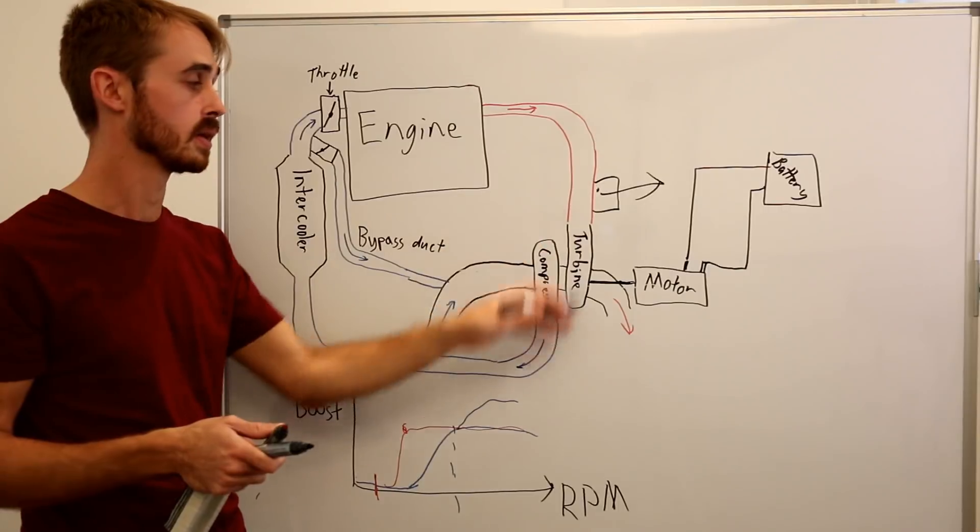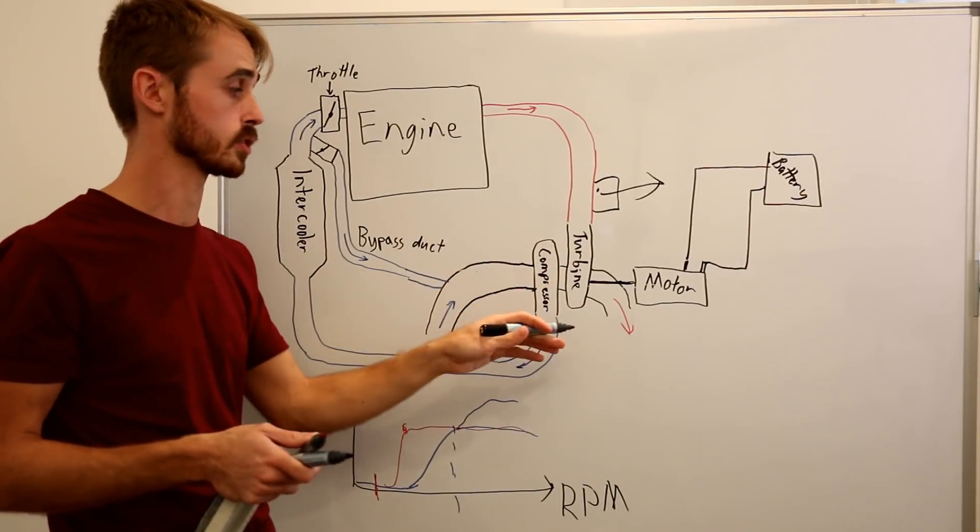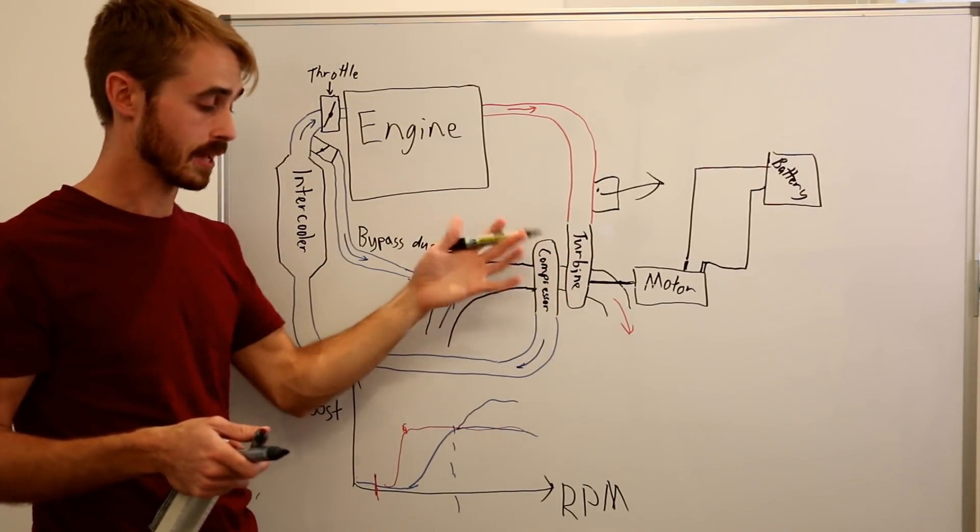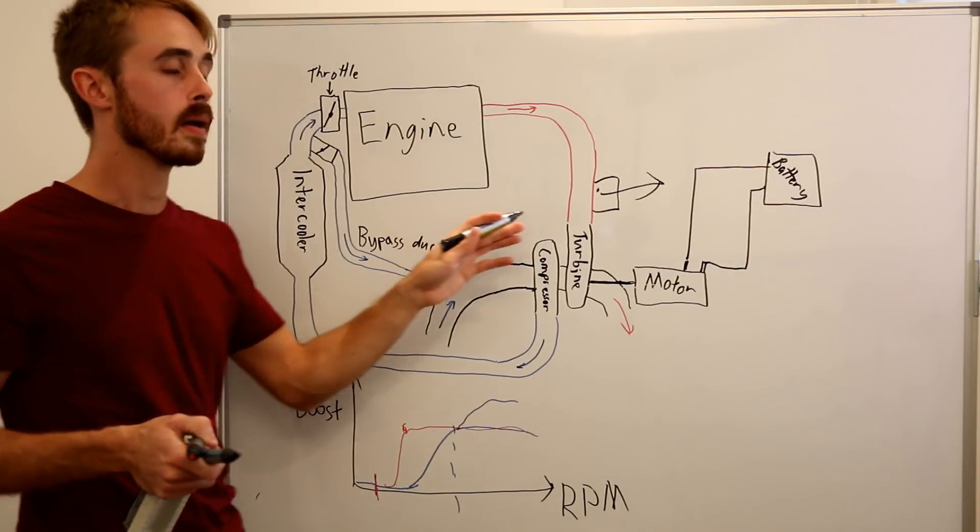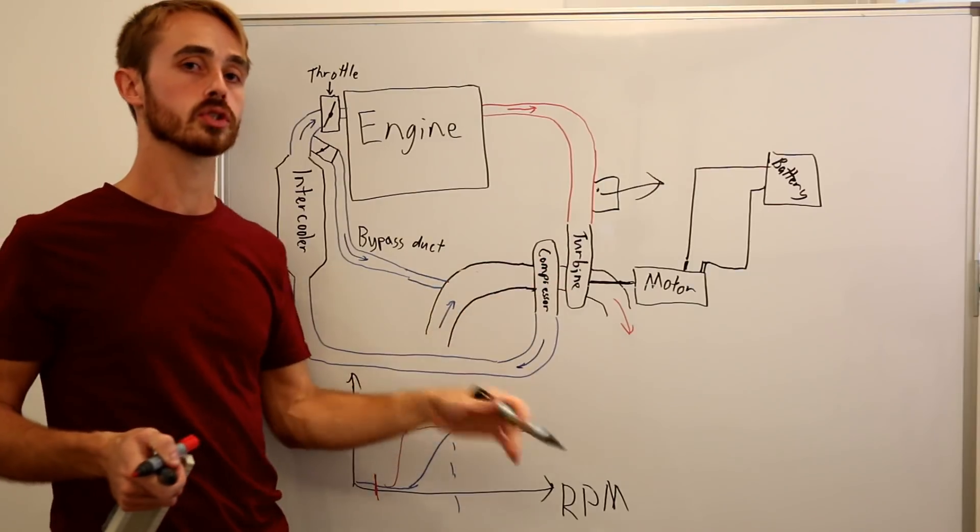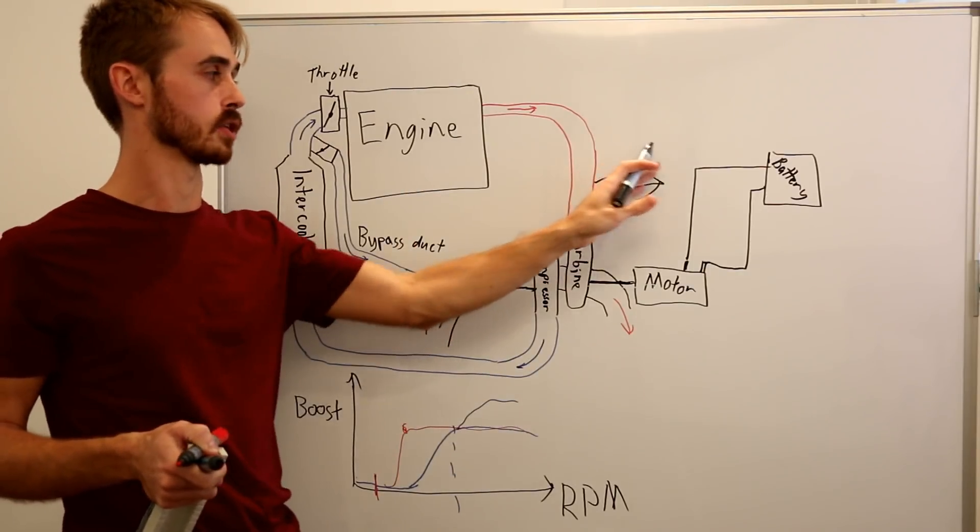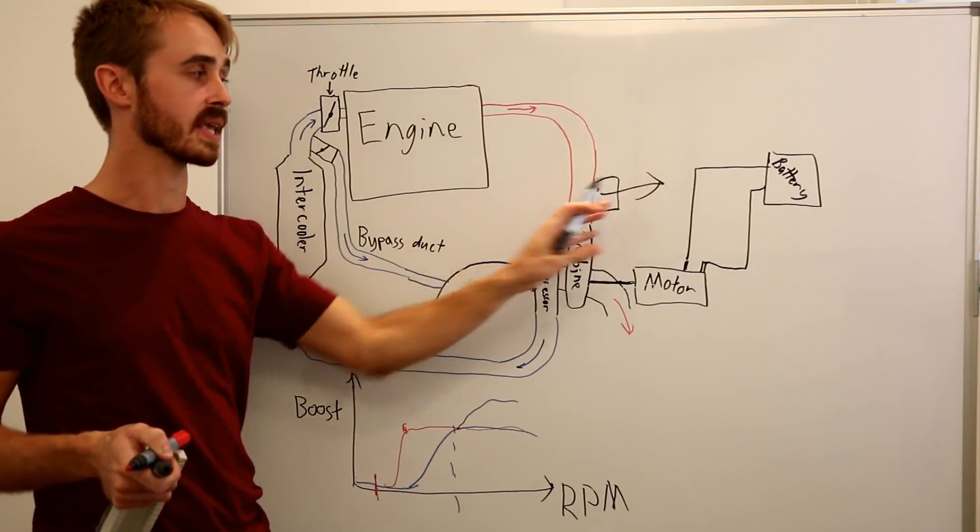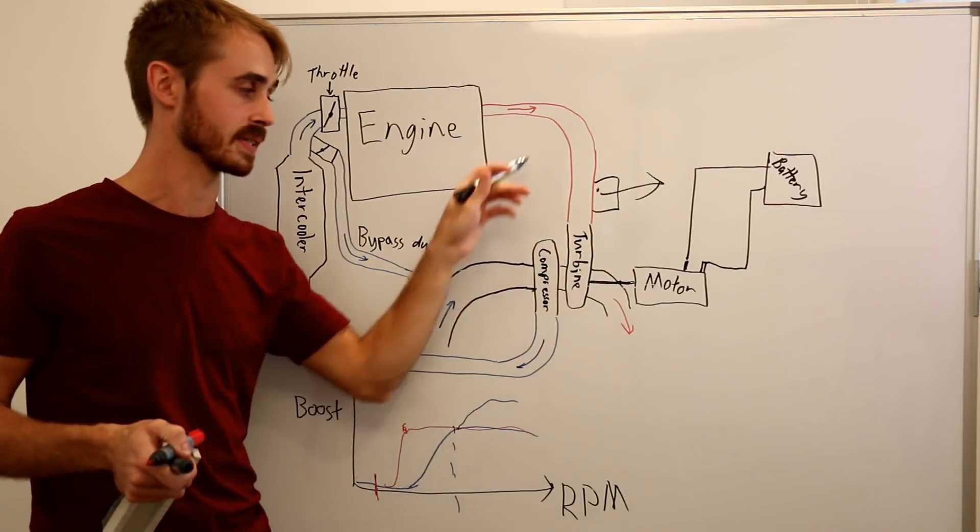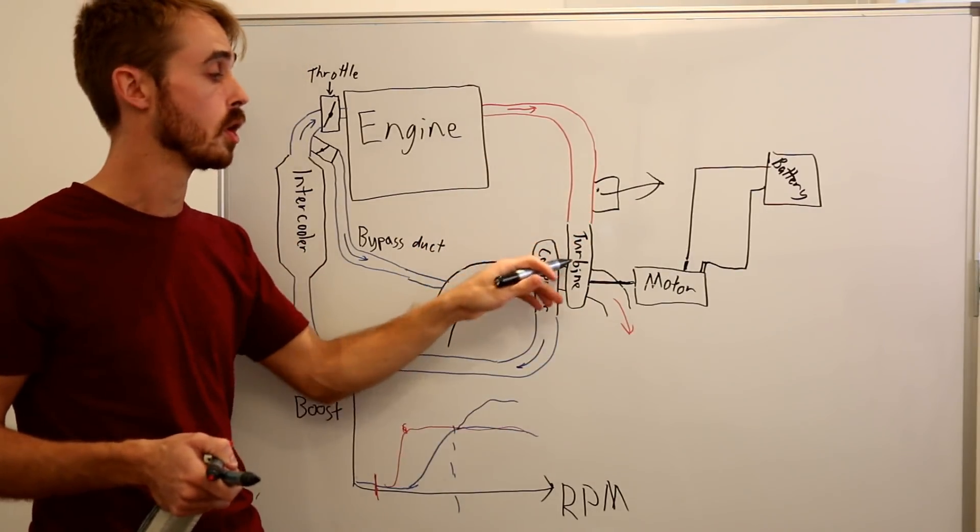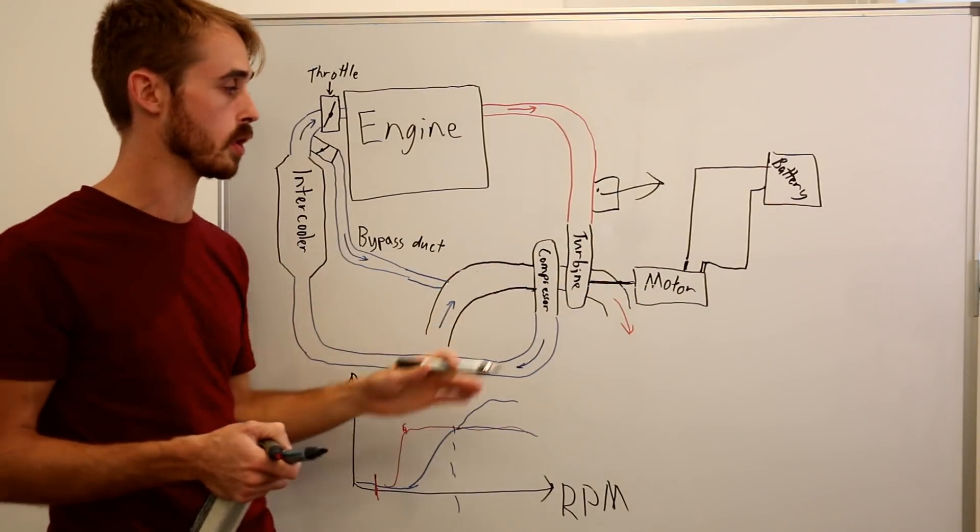This means that the turbine isn't going to be getting as much exhaust gas to it and then as a result it won't spool the turbo as hard. So we generally will use that to try and maintain pressure here. But if we can slow down the turbo without having to open this wastegate, we can harvest the excess energy that this wastegate is effectively just dumping away to the exhaust. We can get that back by using the motor as a generator in reverse.